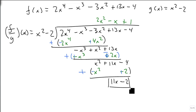Because this is smaller than the x squared, we have our remainder. Our answer for f over g of x is 2x squared minus x plus 1 plus 11x minus 2 over x squared minus 2. And that's how we divide polynomial functions.